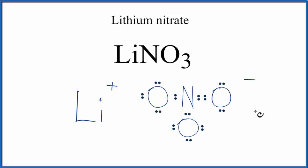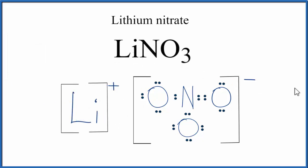Next, we should put brackets around the nitrate ion to show it's an ion. You also sometimes see brackets around the metal ion. And that makes this the Lewis structure for LiNO3, lithium nitrate.